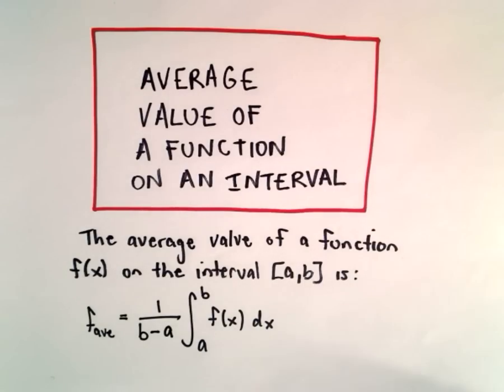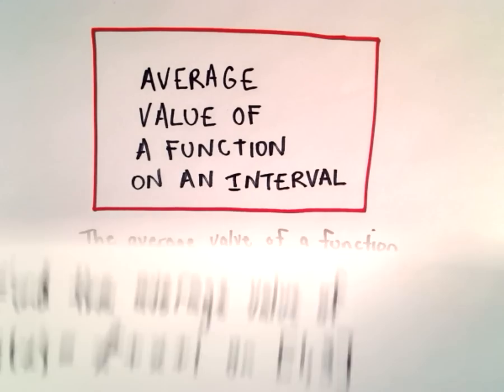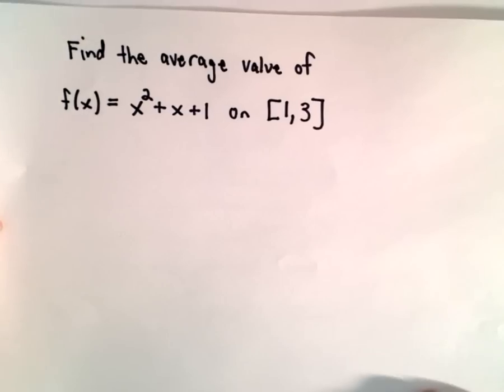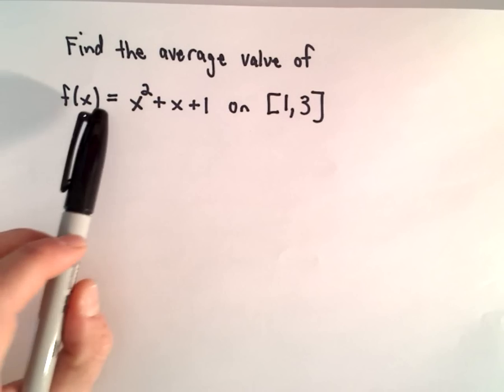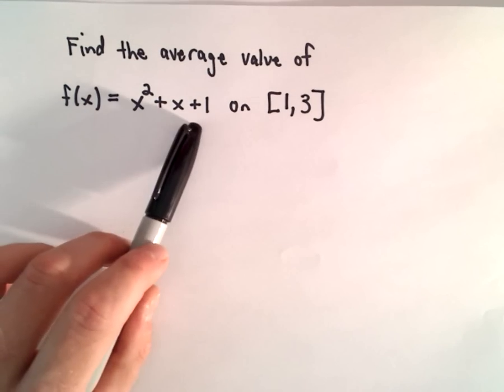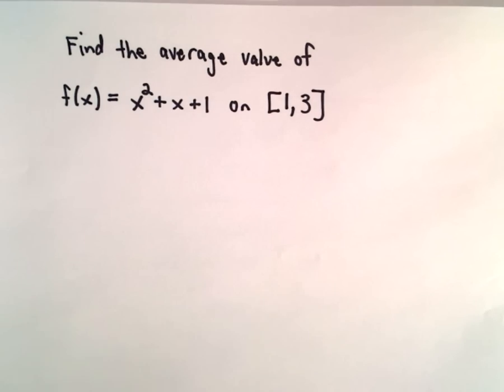So typically when you see these problems, there really wasn't a lot more to doing these problems than just using that formula. Just a quick example here. We're going to find the average value of the function f(x) equals x squared plus x plus 1 on the interval from 1 to 3.